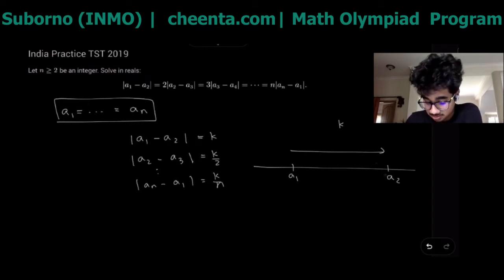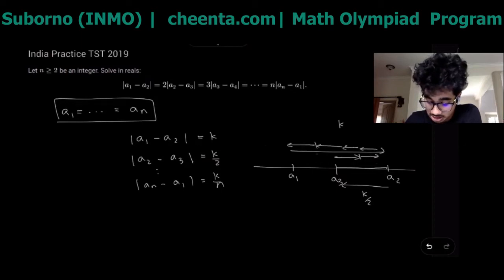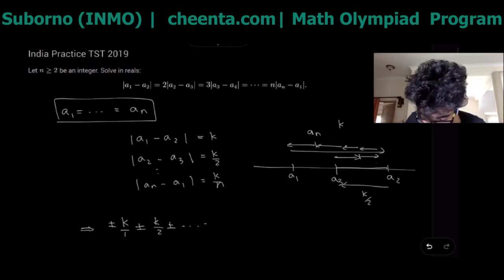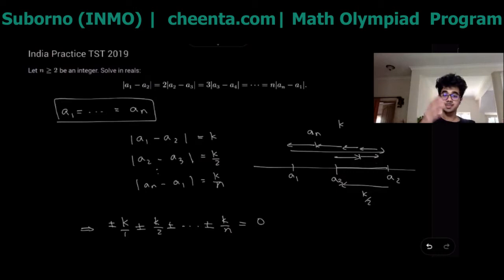Let's see what this actually means pictorially. Let's have a number line where a1 was somewhere here and let's assume that a2 was greater so we went k distance here for a2. Now a3 let's say could have been backwards so we went k over 2 here for a3 and so on. It would have gone forward, more forward, backward, backward and the thing is that the last one has to end up back at a1.